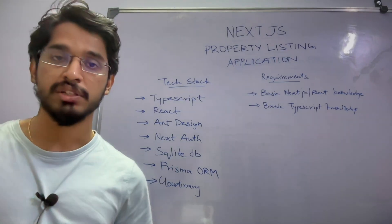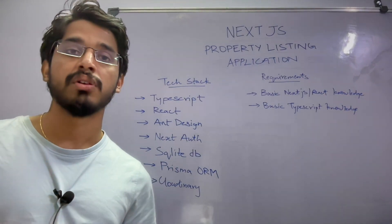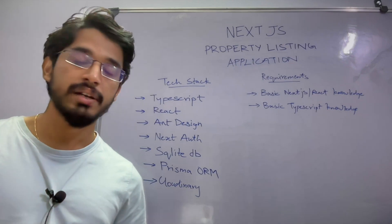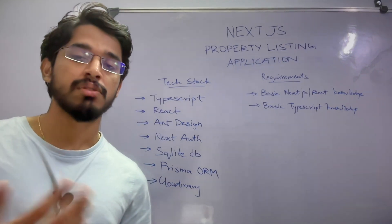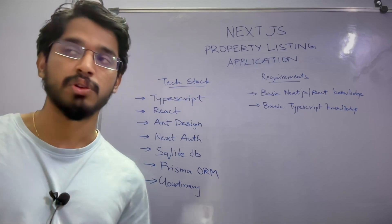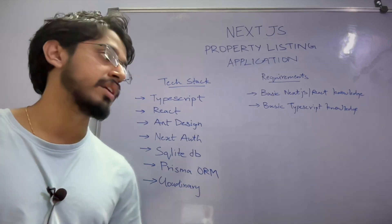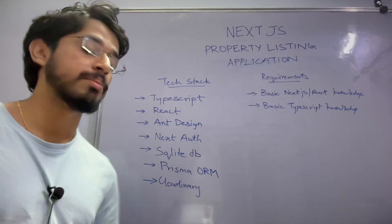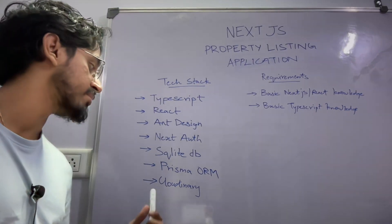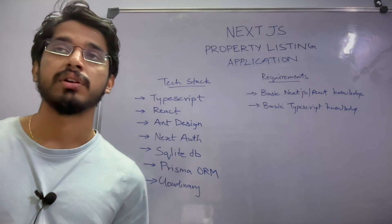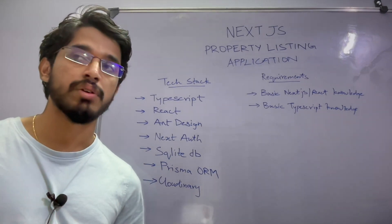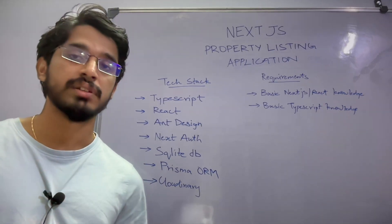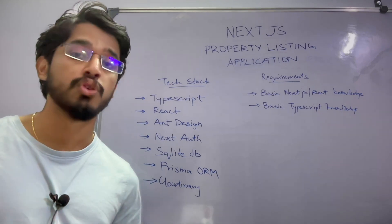Apart from that, we'll be using NextAuth for authentication — specifically Google Auth for signing in and logging out. For the database we'll be using SQLite, which is a lighter version of MySQL. We can use it for this project since it's not a heavy application. To communicate with our database we'll be using an ORM called Prisma — that stands for Object Relational Mapping. We'll also be using Cloudinary for storing images on the cloud, so we don't have to manage a separate container and Cloudinary makes it a lot easier.